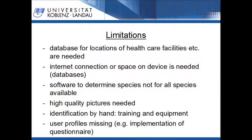The identification by hand needs a little bit of training and also equipment. For example, in most identification keys the morphological characteristics have Latin names, and it takes a little time to get familiar with these names. For small insects, a magnifying glass is sometimes also needed. To deliver information tailored to the user, a user profile is needed — for example, whether the user has used pesticides in the past. Such profiles have to be created, e.g. by answering a questionnaire prior to the usage of the software tools.